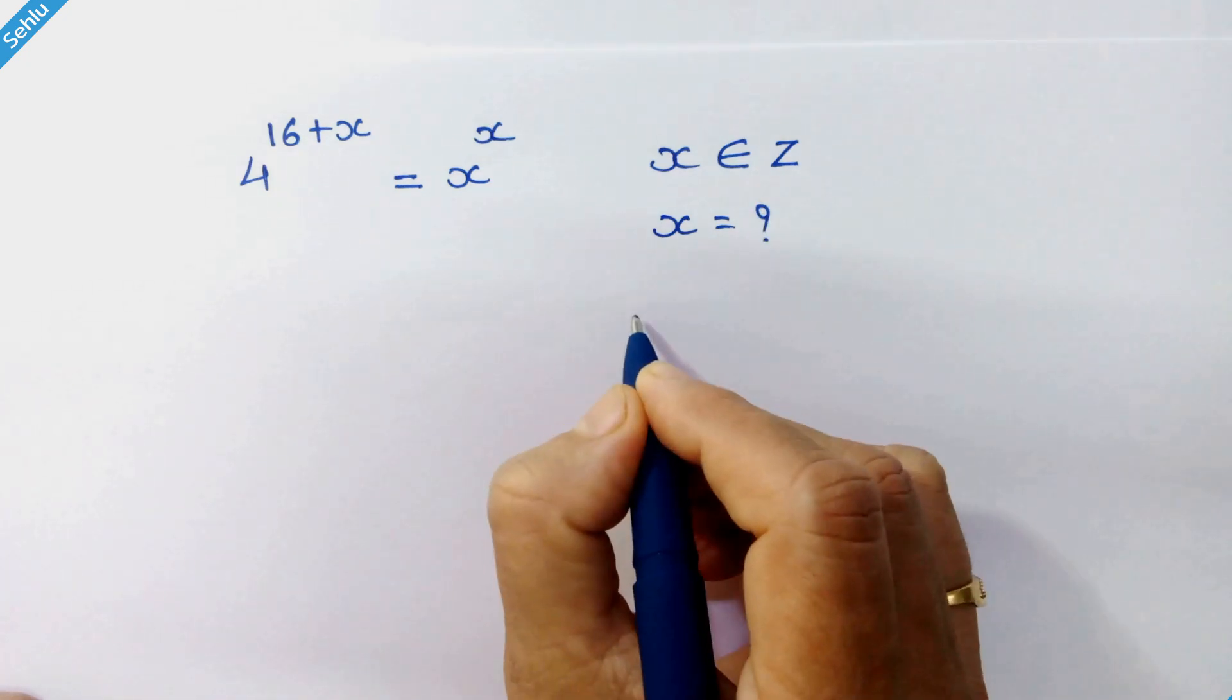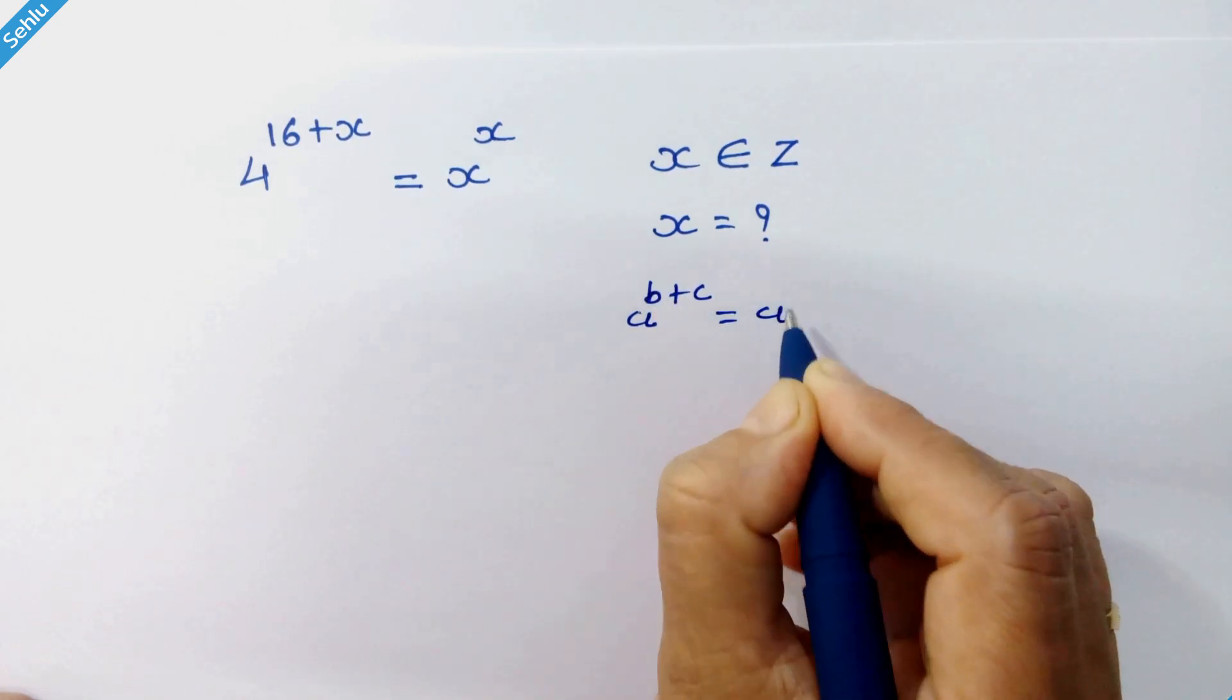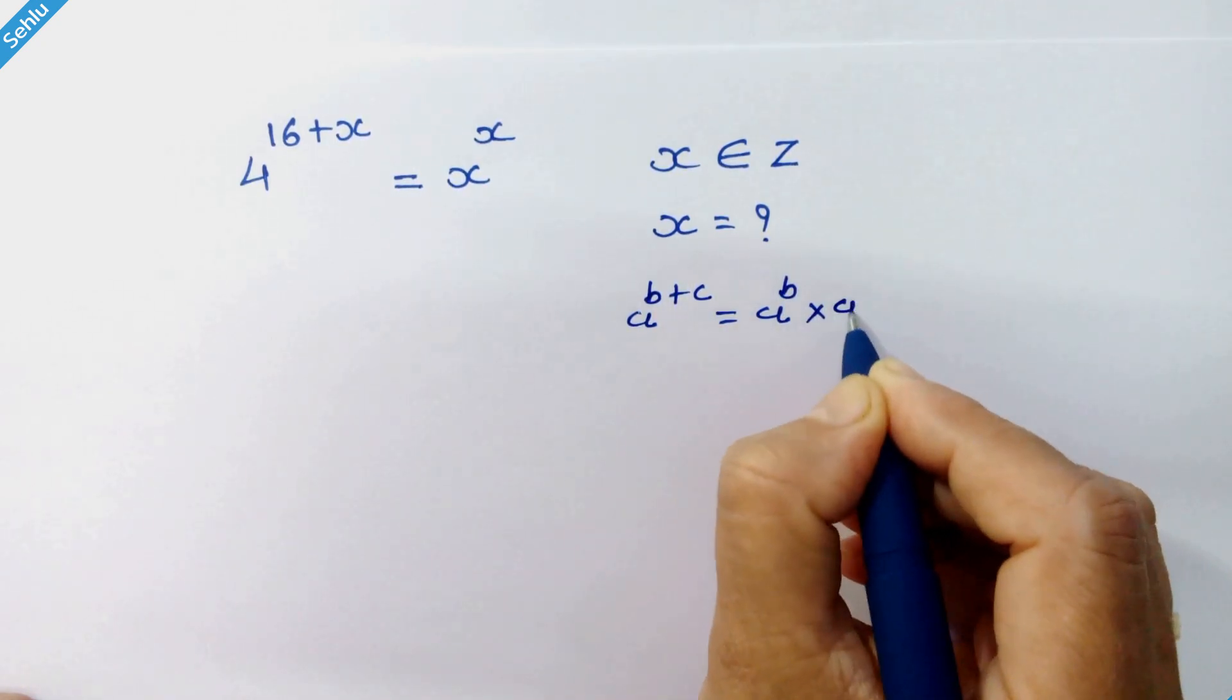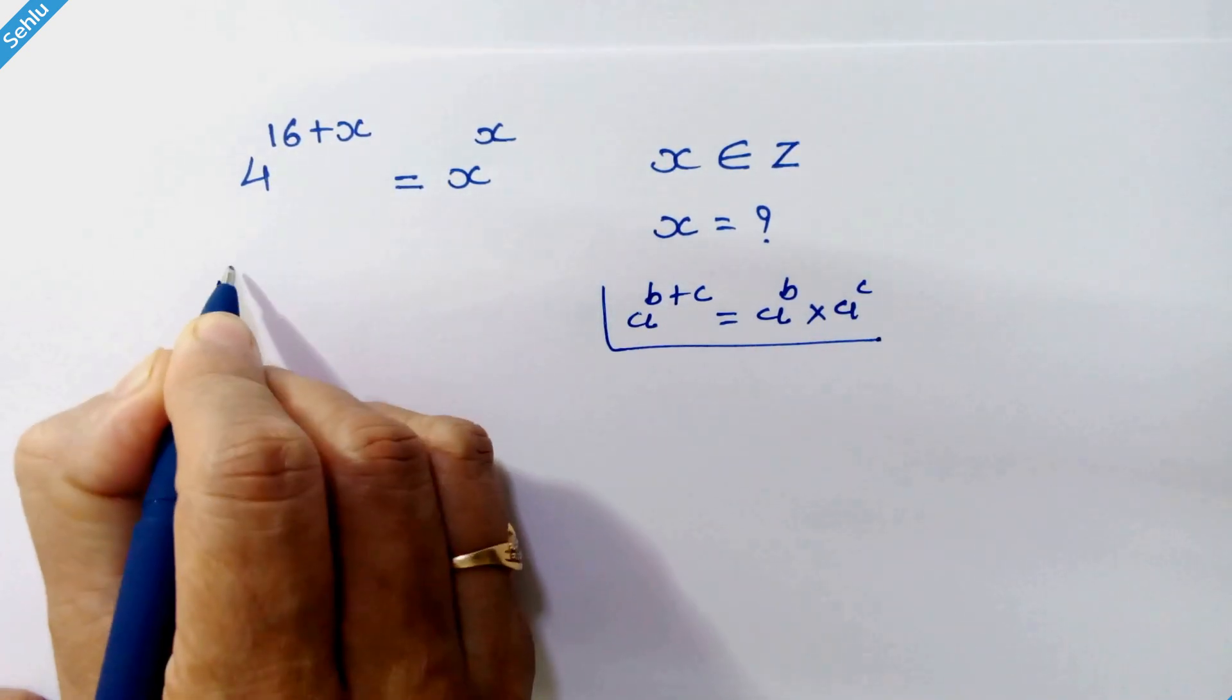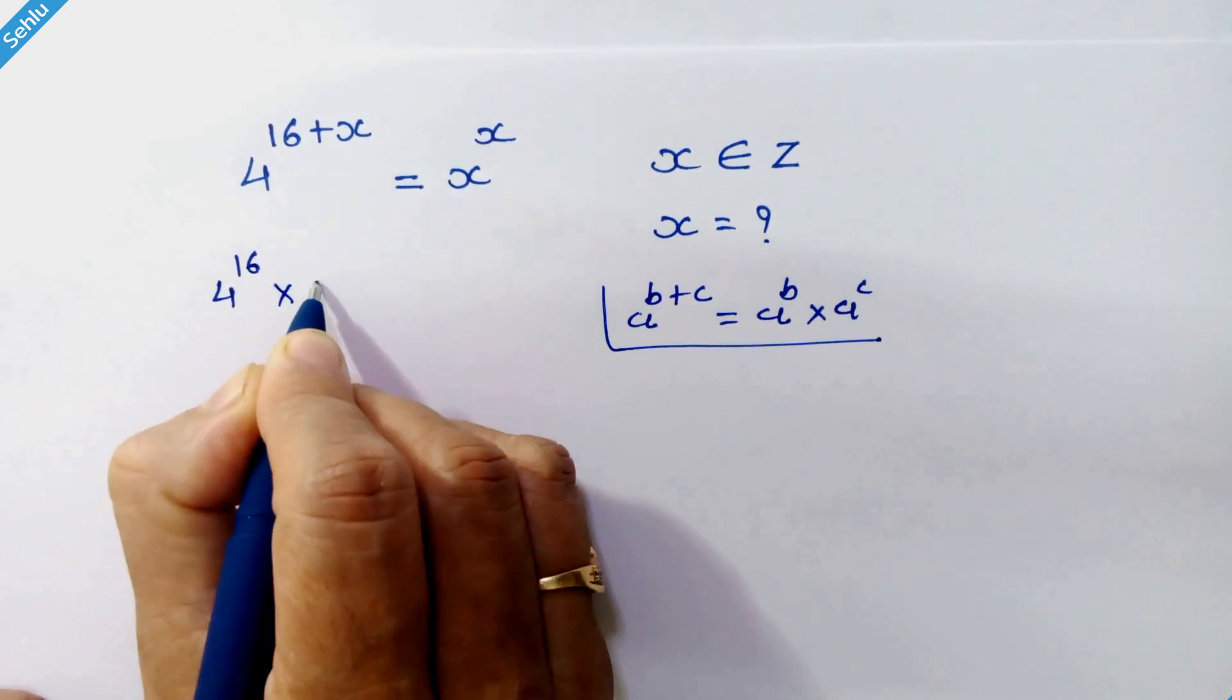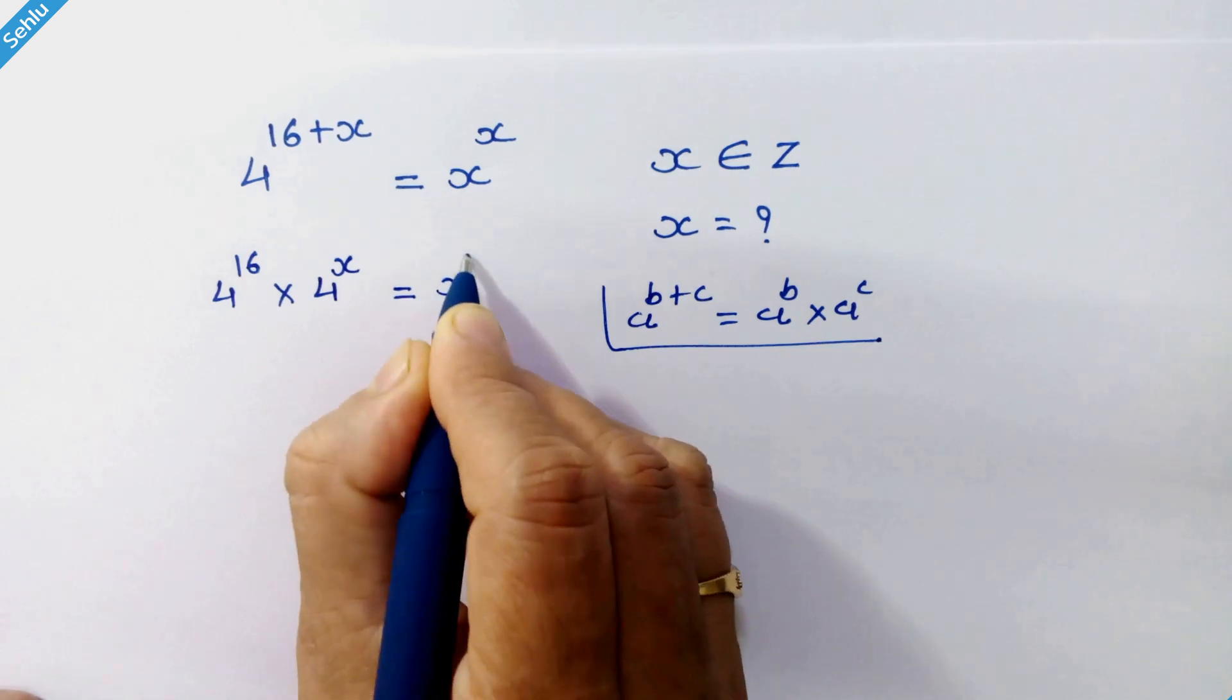Do you know this rule where a raised to b plus c can be written as a raised to b times a raised to c? We'll apply this rule here. So we have 4 raised to 16 times 4 raised to x equals x raised to x.